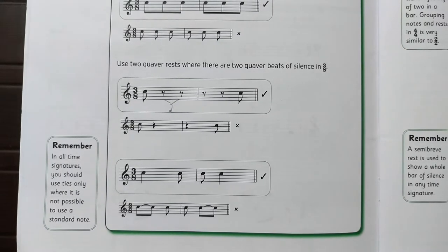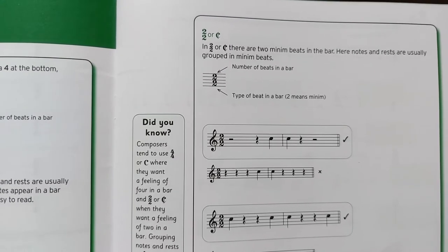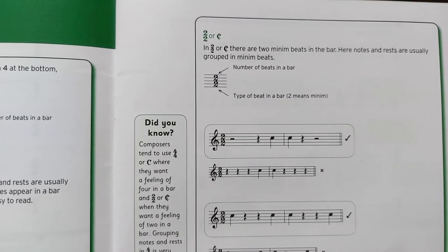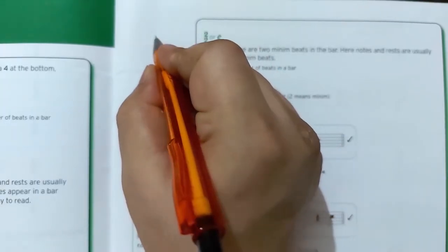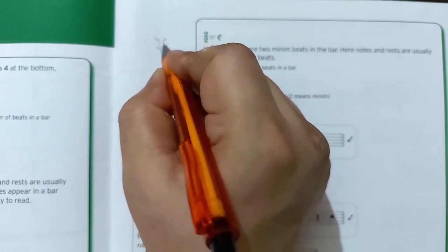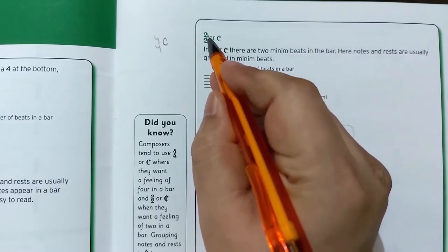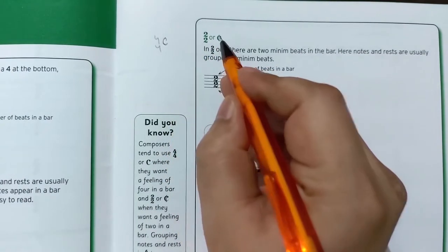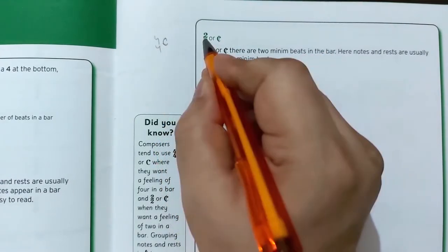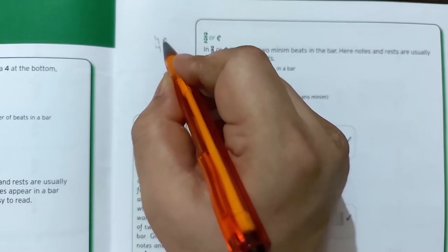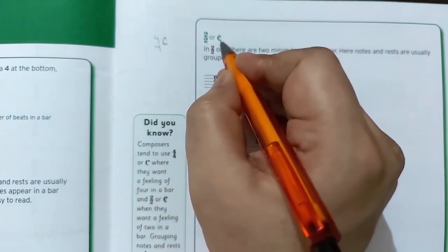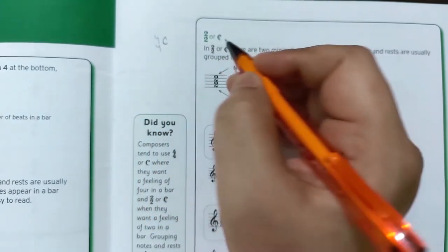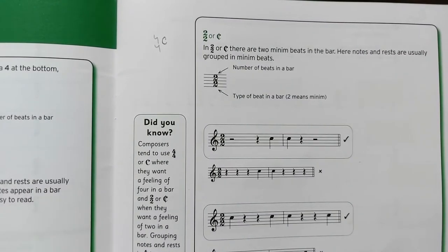Now let's move to the next new time signature we are learning today: two by two. Till now we have learned four by four, which we can represent with the letter C — that is the common time signature. We can also represent two by two with a C, but we put a cut through it. Remember: two by two is C with a cut, and four by four is C without the cut. Two by two means two minim beats in one bar.